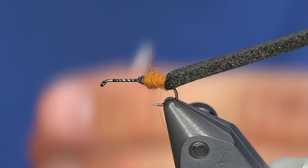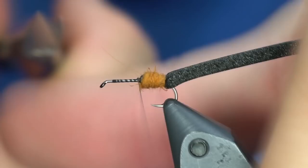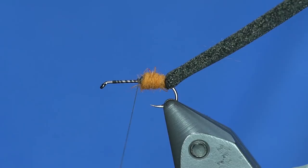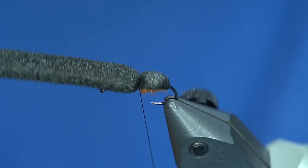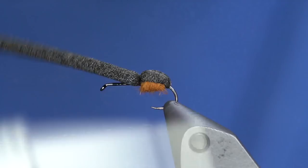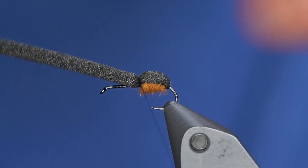So we just have a little bit of dubbing here. Now we're going to take this foam and just pull it straight over the top. We're going to tie that down. See, that kind of has a nice bubble shape to it. And I'm going to try to wrap my thread back into this bulb to further form it.